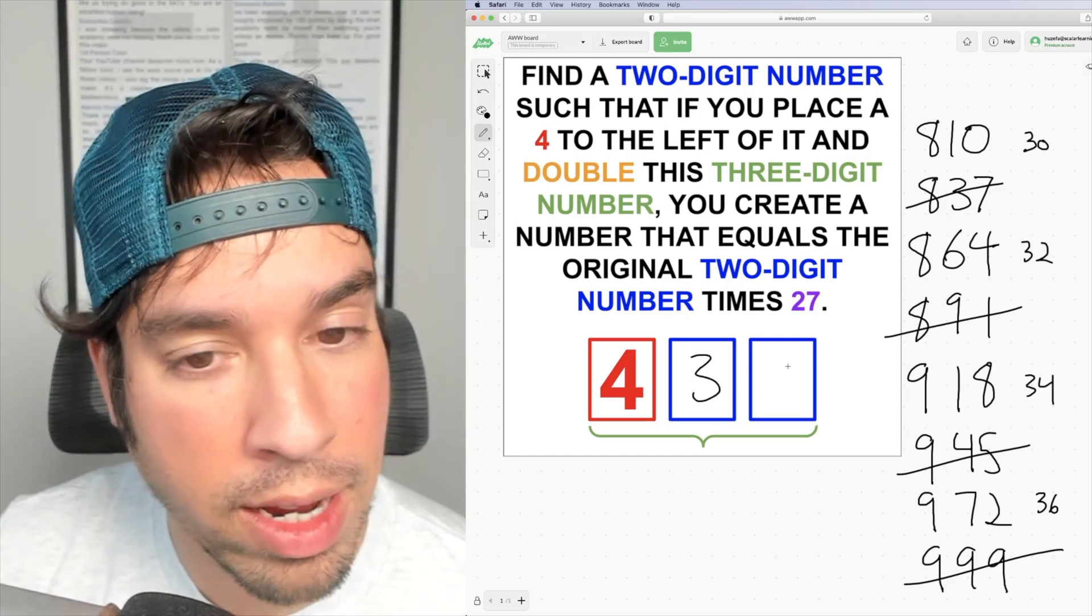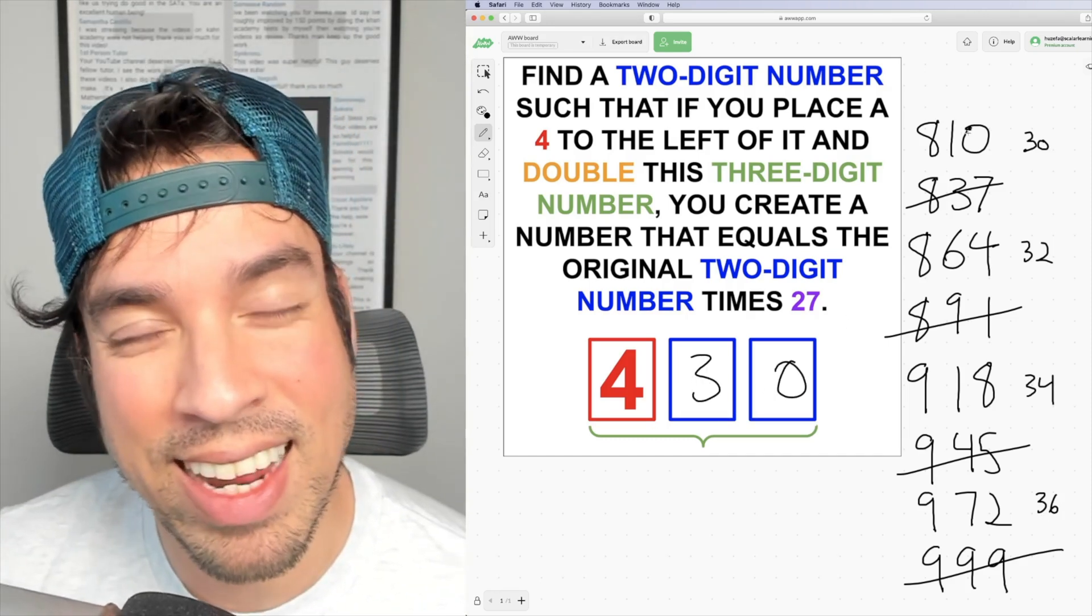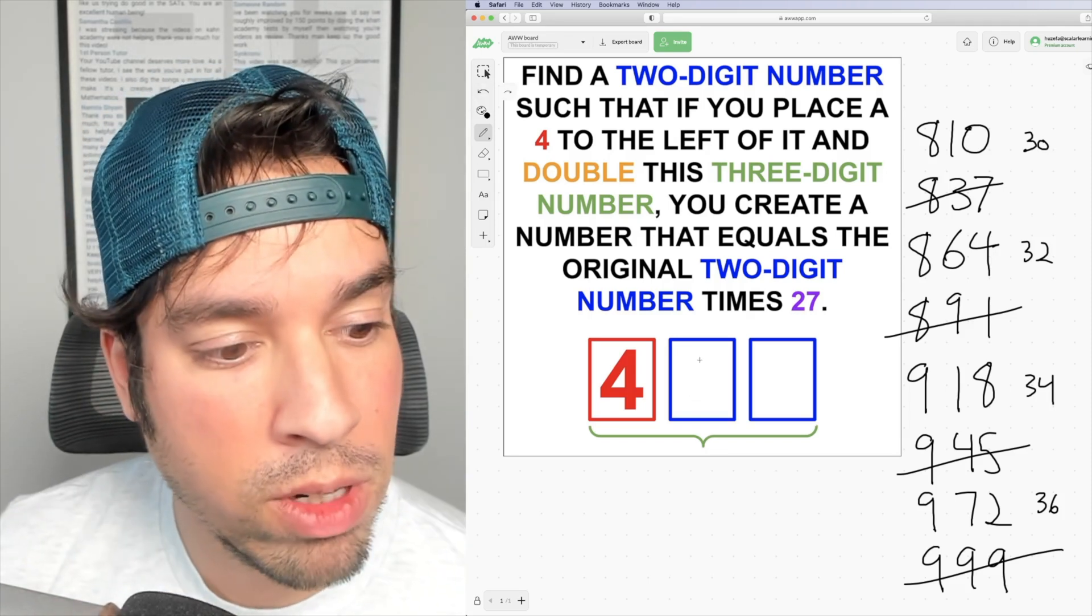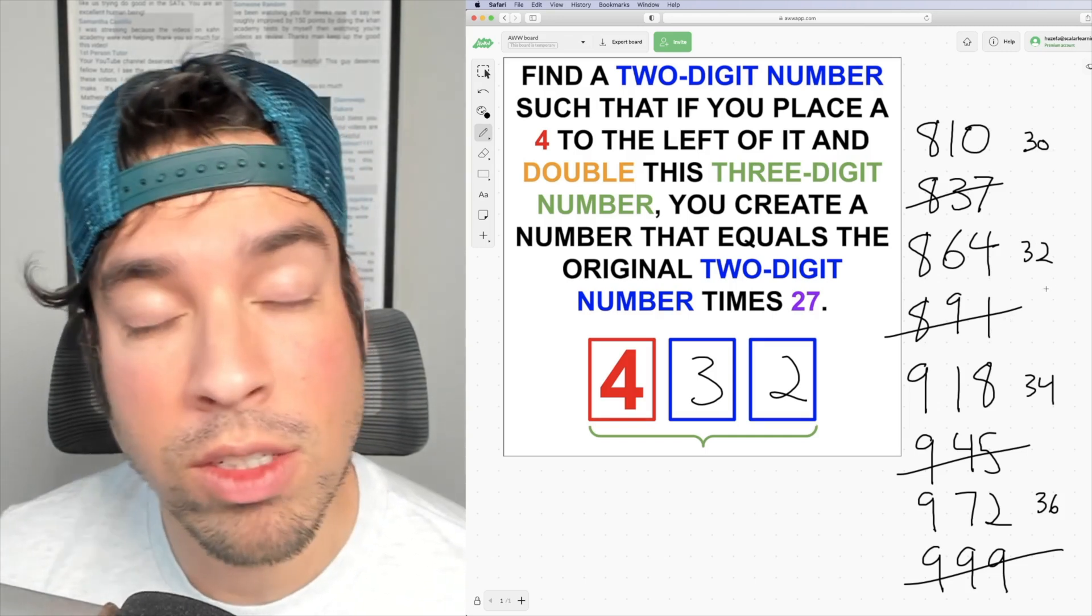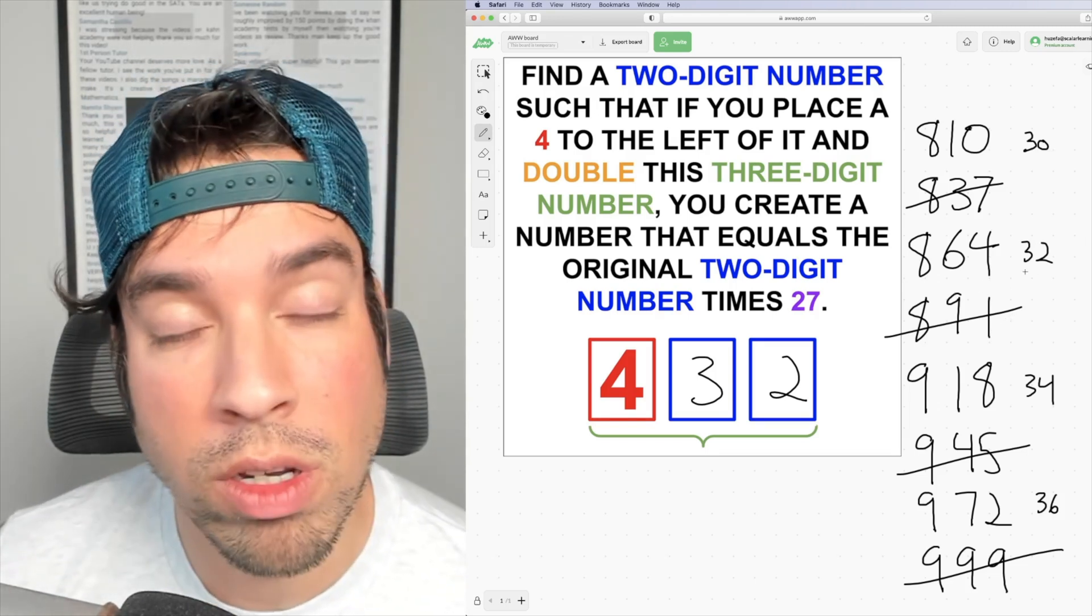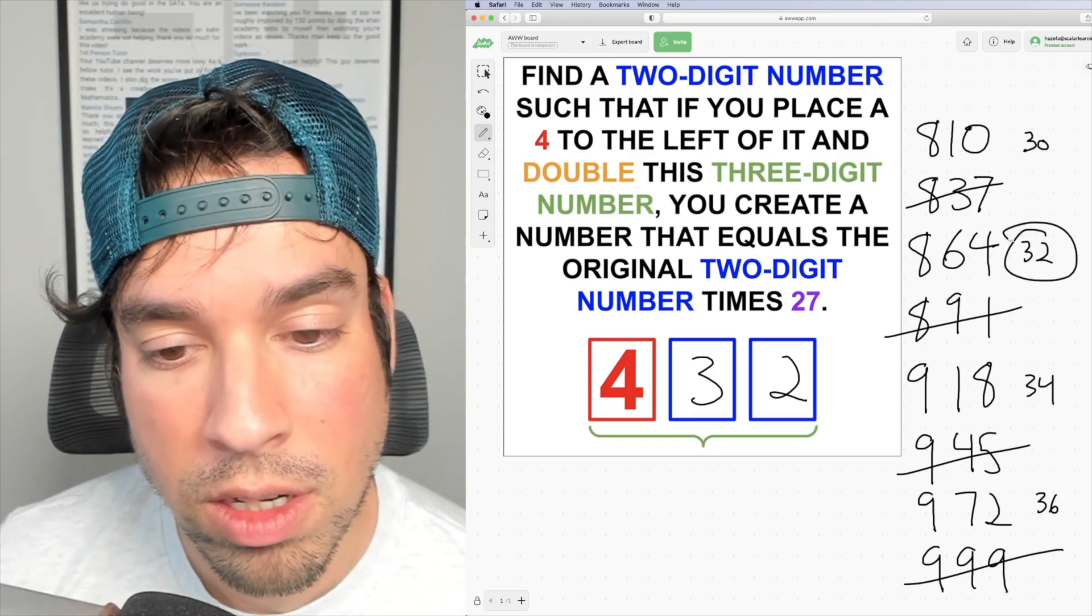If the number were 430, if we double that, we get 860, not 810. If the number were 432, we would get 864. And that's also 27 times 32. Therefore, the answer is 32.